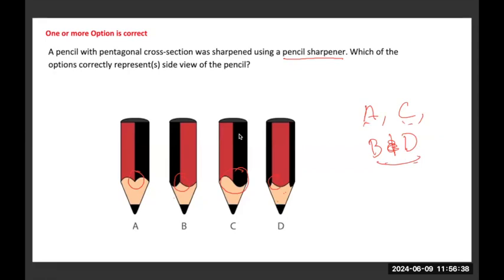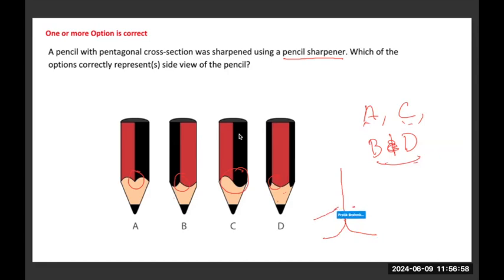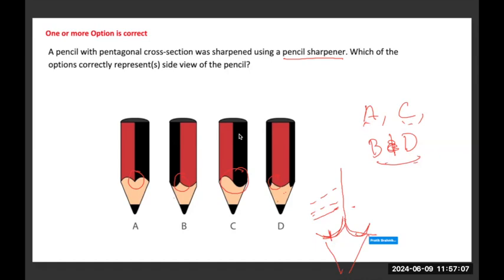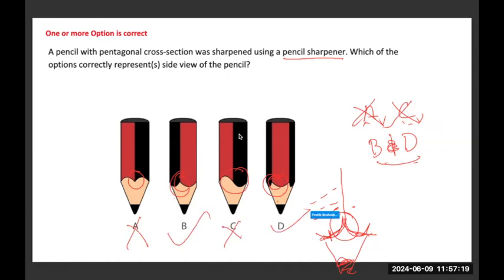When you sharpen a pencil, if you observe carefully, the edges are always the ones which get sharpened first, which means where you have edges that will be of a higher dimension when you cut it out. So we are looking for the options where this condition is happening — this condition is happening in B and D. So A and C are wrong, and B and D are the ones which are correct.